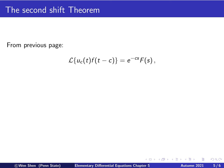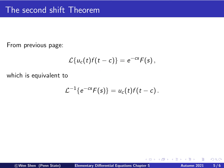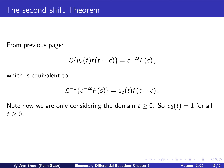This theorem is the counterpart of the first shift theorem, where these things happen in the other direction. An equivalent statement is that the inverse Laplace transform of e to the negative cs times F of s equals uc of t times f of t minus c — you first find the original function f, then shift it by c units and multiply by uc of t. We are only considering the domain t bigger than 0 because we are considering initial value problems.